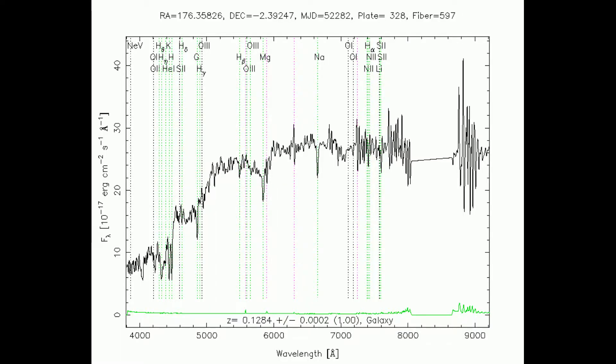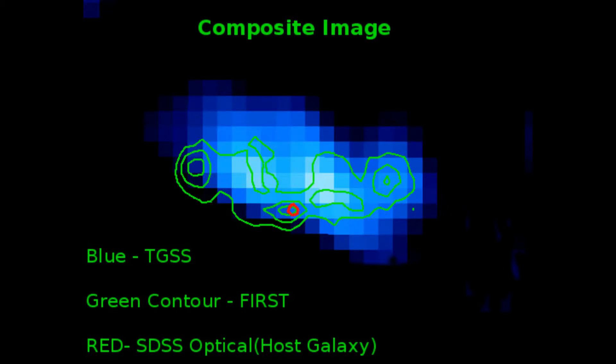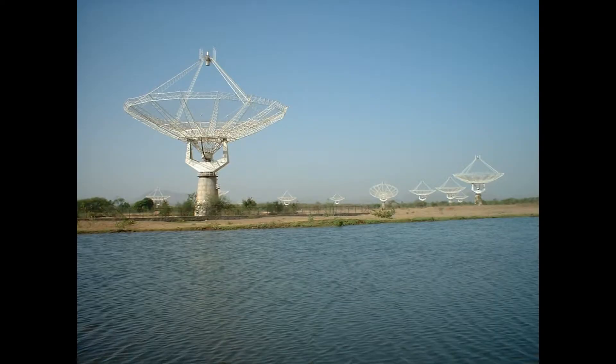The host galaxy is at a redshift of 0.13. There is a difference in distribution of fresh relativistic plasma seen in the first radio sky survey and old plasma seen in our own TGSS, which is a sky survey conducted by GMRT.